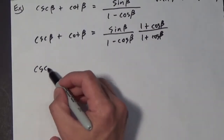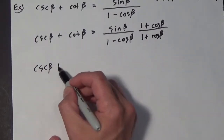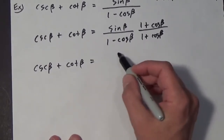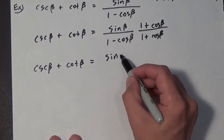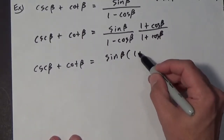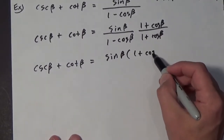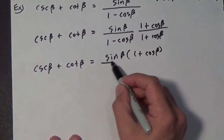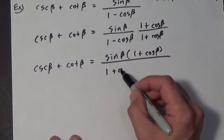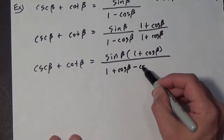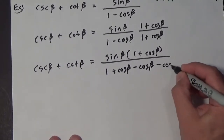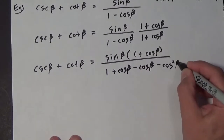Over here we have the cosecant of beta plus the cotangent of beta equals the sine of beta times 1 plus the cosine of beta, all over 1 plus the cosine of beta.